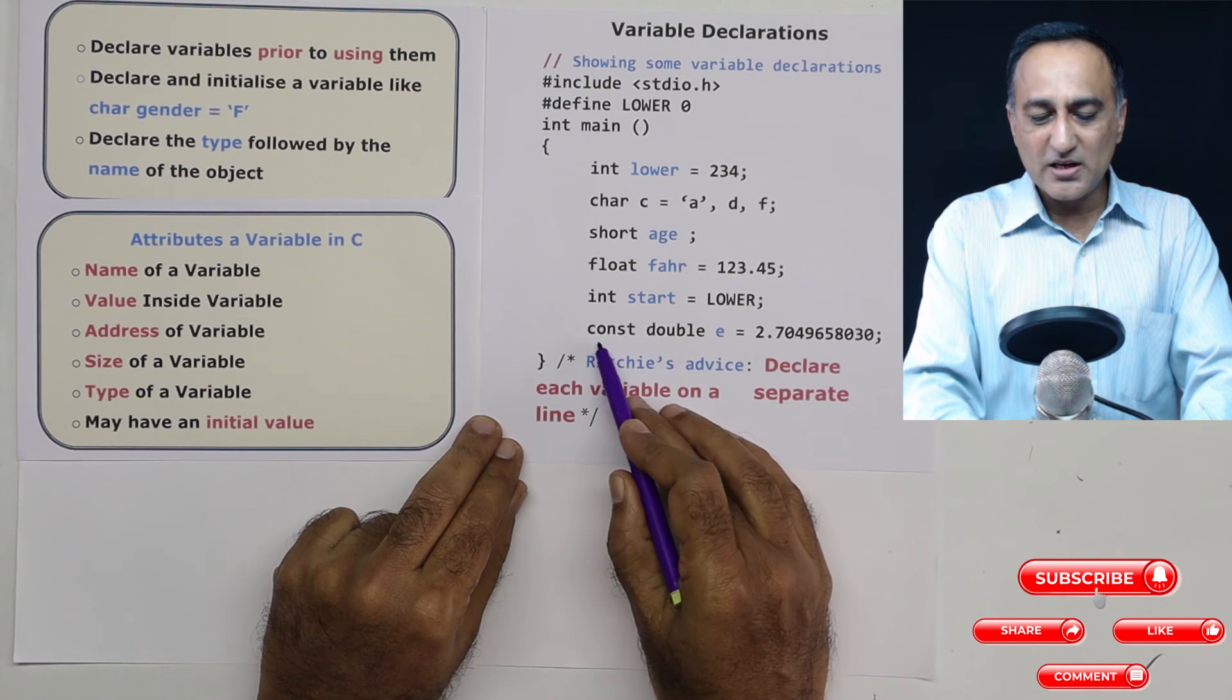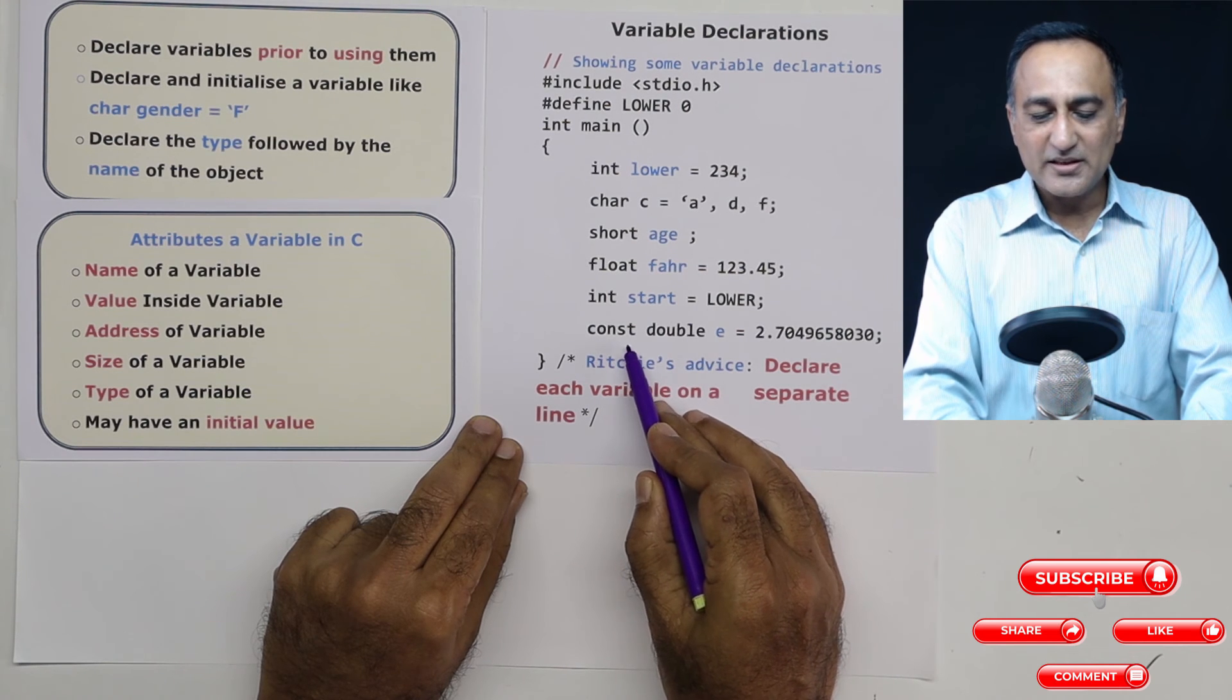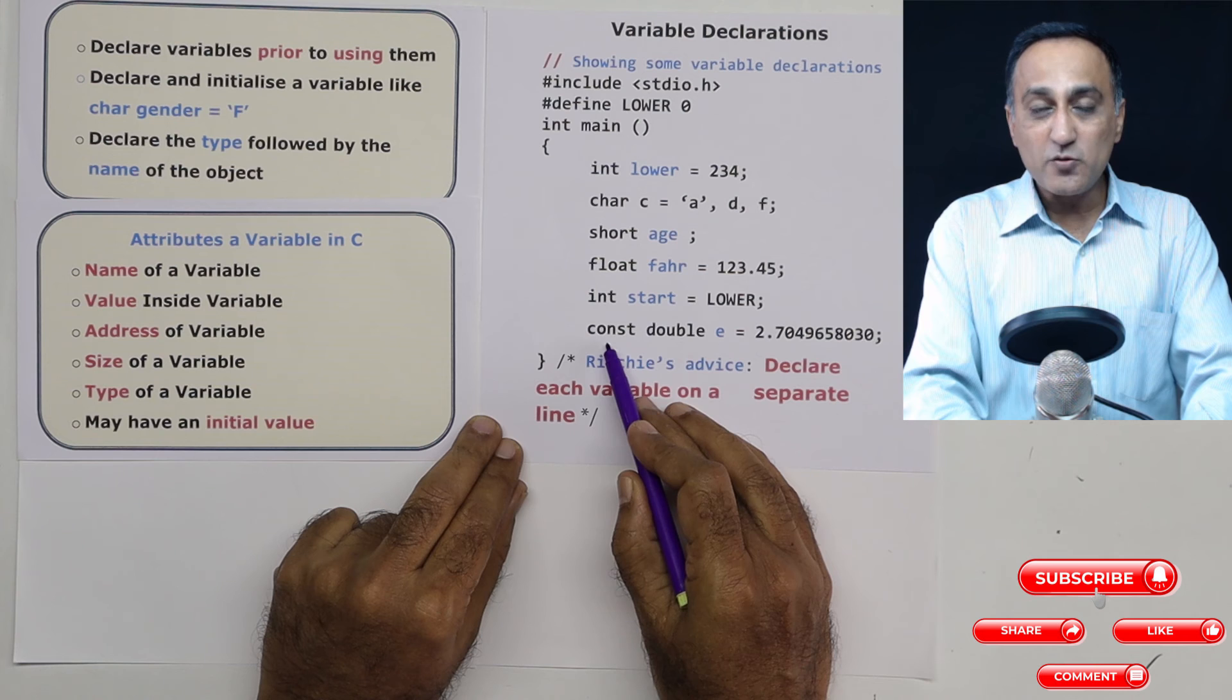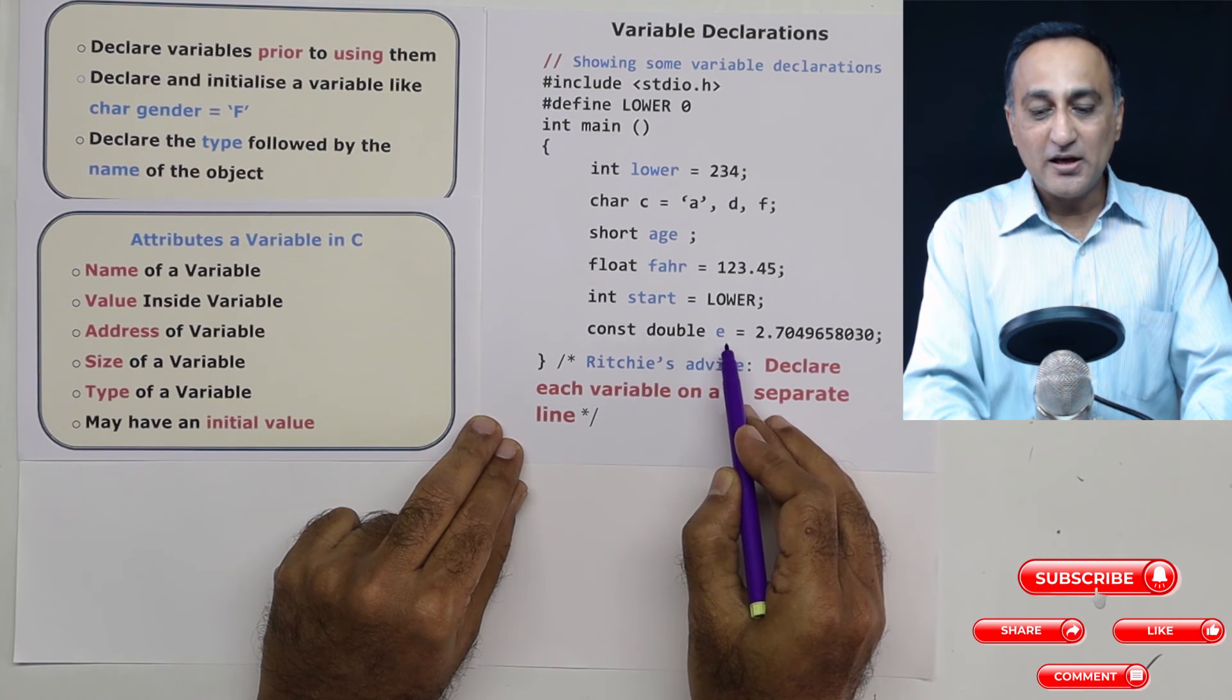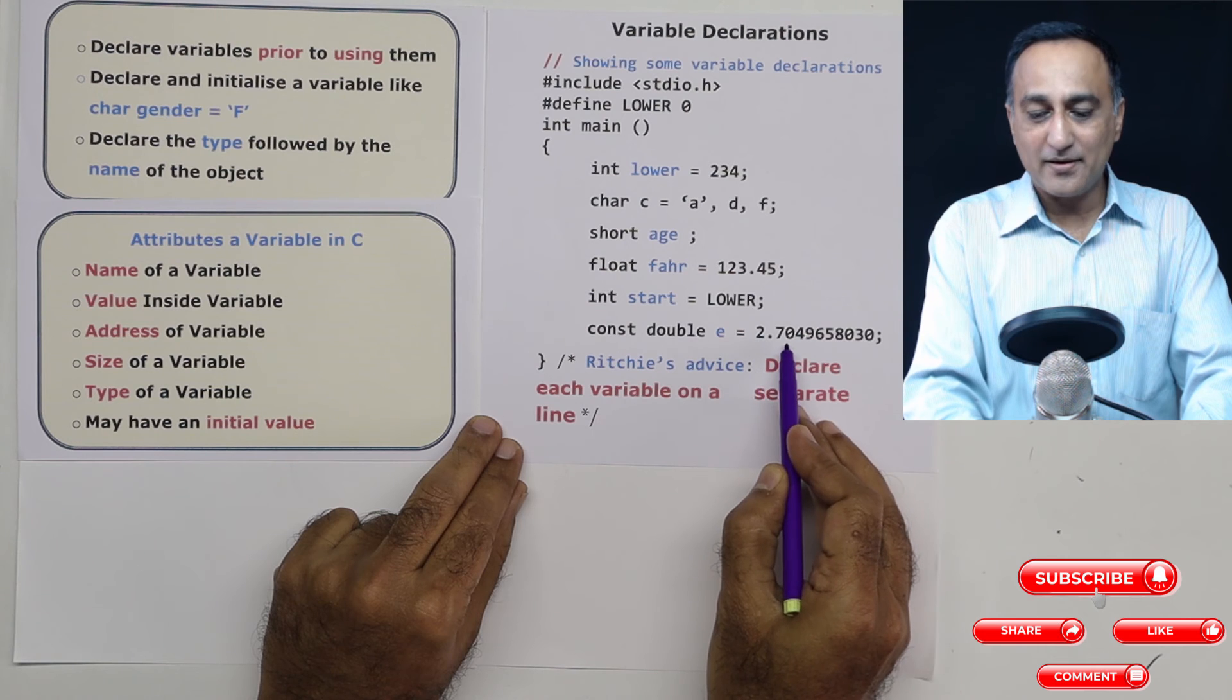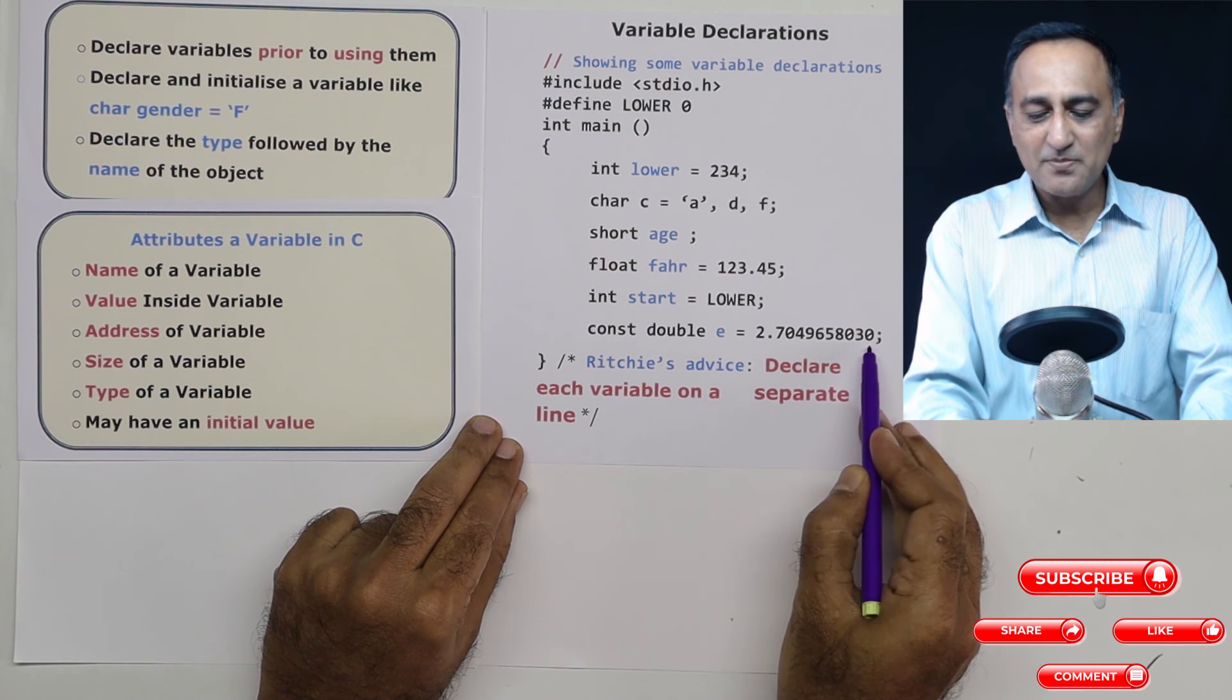Here I have declared a double variable called E, except that I have used another keyword called const. That means what it says E is a variable of the type double, but its value is constant. That means you can't change this value of E. If you try to change the value of E in your program, you're going to get a compile time error itself. So I've initialized with some numbers here.